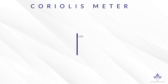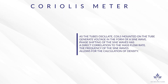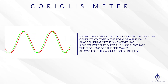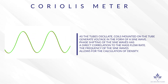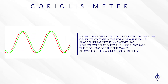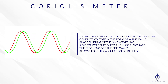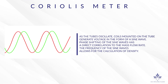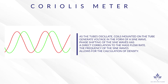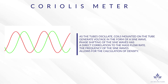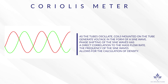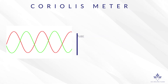As the tubes oscillate, coils mounted on the tube generate voltage in the form of a sine wave. Phase shifting of the sine waves has a direct correlation to the mass flow rate. The frequency of the sine waves allows for the calculation of density.